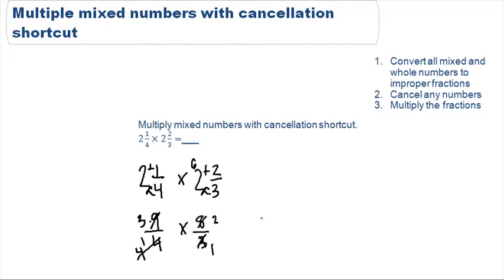Let's rewrite our fractions after we've used the cancellation shortcut. We have 3 over 1 times 2 over 1.